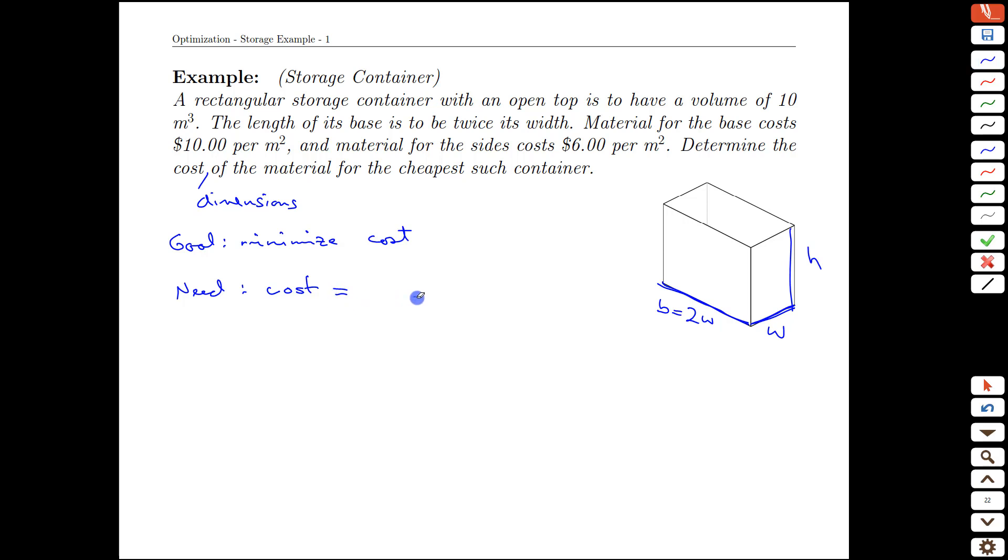With that in mind, we could choose w and h in principle to be whatever we liked, and then we would find the width of this side here is twice w. All right, so what's the cost made up of? Well, the cost is going to be made up of the base cost plus the side cost, and there's more sides, so sides cost. What is the base cost? Well, it's going to be a rectangle that is w by 2w, w times 2w, and if we look at units, that's going to be meters squared, that's the area of the base, and we're also told that the cost is $10 per square meter. So the units there would be dollars per meter squared. Multiply that out, we get a cost in dollars, which is perfect.